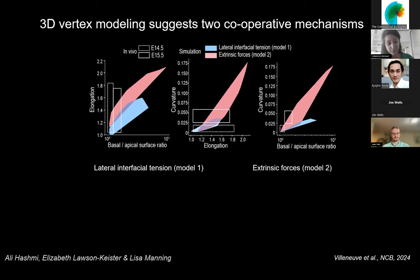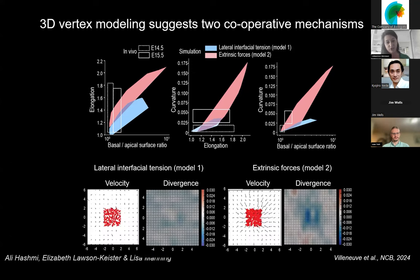However, at E15.5, we were not able to recapitulate the morphological changes by simply changing the lateral interfacial tension. More importantly, only model 2 — with extrinsic forces — could recapitulate the net negative divergence observed at E15.5 within the placode. This modeling suggests that external forces are actually needed to drive the morphological changes and tissue movements we observe experimentally.